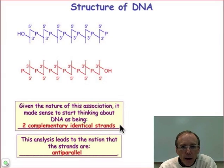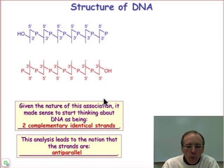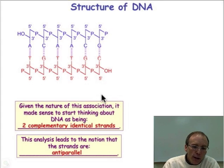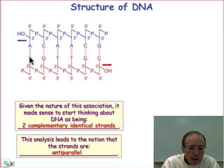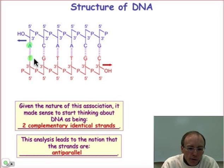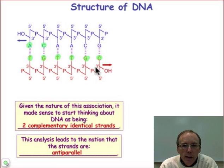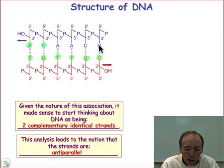This idea of complementary identical strands is what we have in DNA. The complementary double strands pair up every T with an A — every T in one strand is paired with an A in another strand, and likewise every G in one strand pairs up with a C. Once we set the sequence of nucleobases, we automatically define the sequence in the corresponding strand: G with C and A with T.